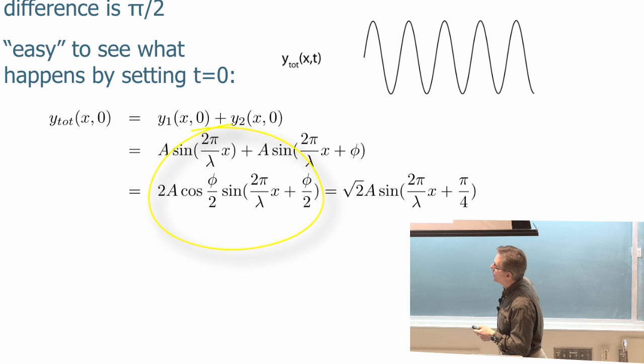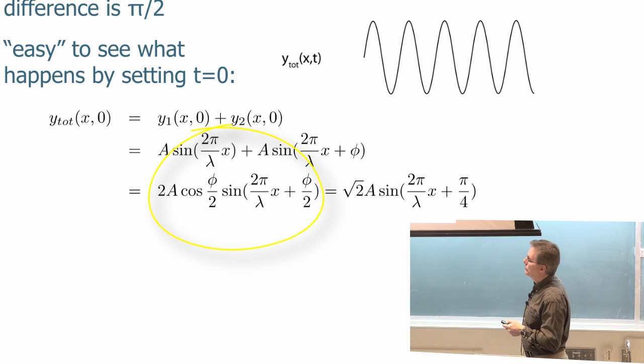Now when you add sine of something plus sine of something else, there's a trigonometric identity that allows you to write this as 2A cosine φ/2 times sine(2πx/λ + φ/2). And what we get is square root of two A times sine(2πx/λ + π/4) when we substitute in π/2 for the value of φ.